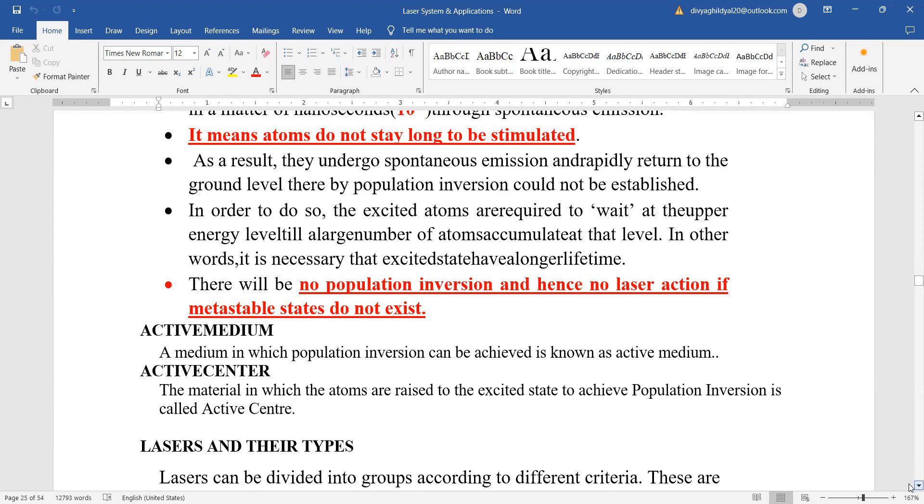Active medium, a medium in which population inversion can be achieved is known as active medium. And the material in which the atoms are raised to the excited state to achieve population inversion is called active center. So the necessary conditions for laser action to appear is population inversion, metastable state and a set of optical cavity.